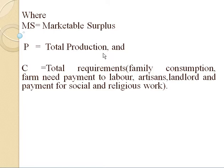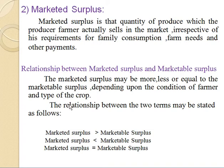Then marketable surplus is 1000 minus 100, that is 900 quintals. Marketable surplus is a theoretical concept. The second type is marketed surplus. Marketed surplus is that quantity of produce which the producer farmer actually sells in the market, irrespective of his requirements for family consumption, farm needs, and other payments. Whatever quantity is actually sold in the market — suppose a farmer sells 19 quintals in the market — then marketed surplus is 19 quintals.